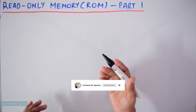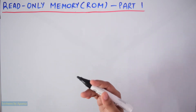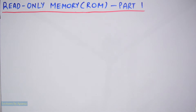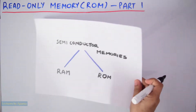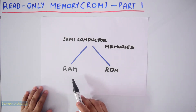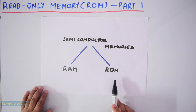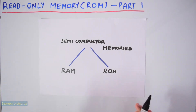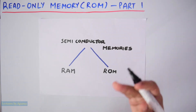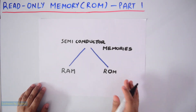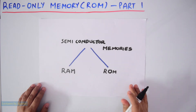In digital systems, memory devices are used to store information. These semiconductor memories are classified into two types: RAM or random access memory and ROM or read only memory. In RAM, you can read or retrieve binary information that is stored in it, and also you can write the information into it. So there is both read and write operation for it.